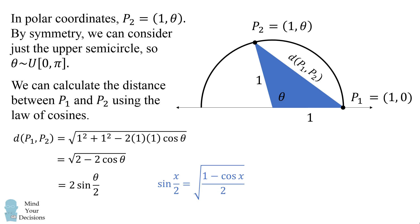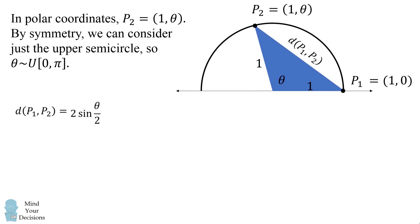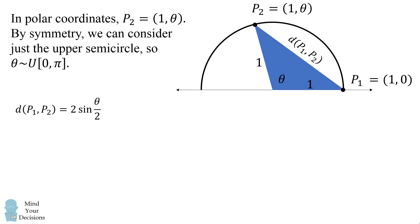So now we have a formula for the distance between p1 and p2. We now need to calculate the average value of this function. Recall that the average value of a function from a to b is 1 over b minus a times the integral from a to b of the function. So we can calculate the average value of the distance function as follows.